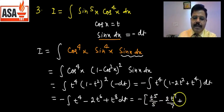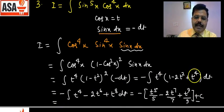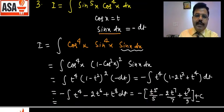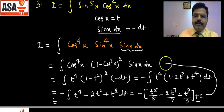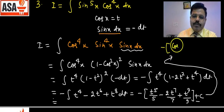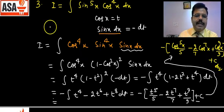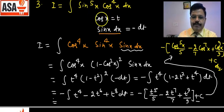Integration करने पर: −(t⁵/5 − 2t⁷/7 + t⁹/9) + c। t = cos x था, इसलिए answer: cos⁵x/5 − 2cos⁷x/7 + cos⁹x/9 + c। तो इस तरीके से एक odd और एक even वाले function का answer तीन terms में आता है।